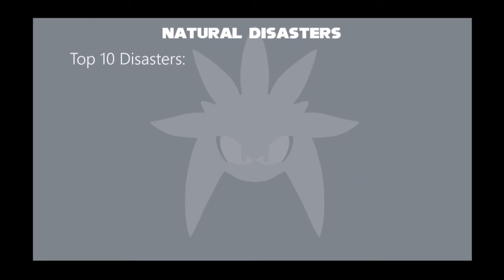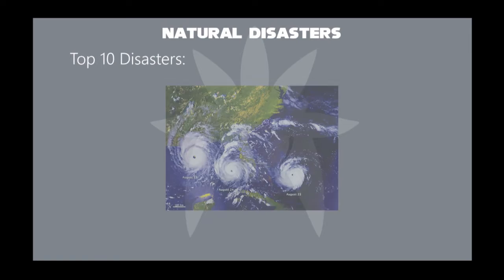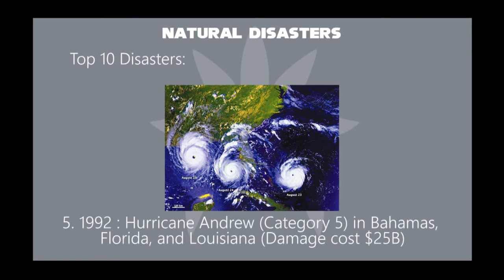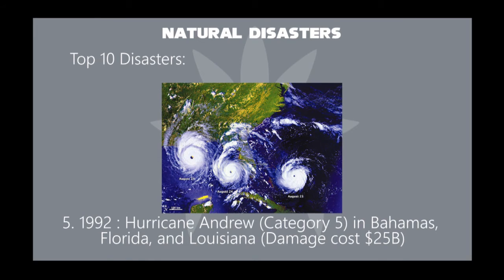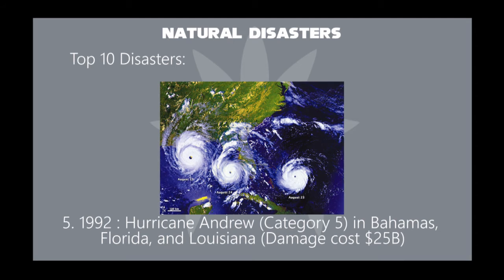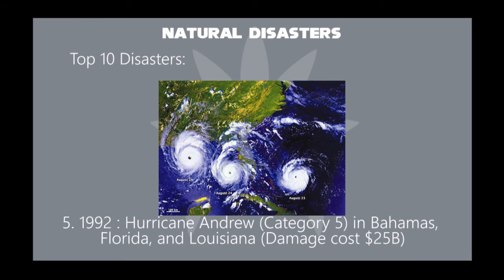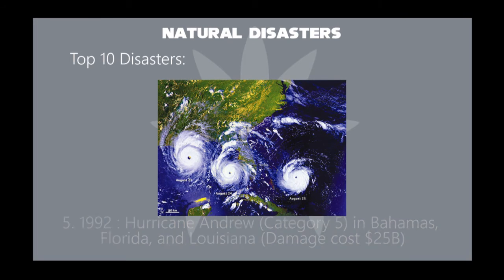In 1992, Hurricane Andrew was a powerful and destructive Category 5 Atlantic hurricane that struck the Bahamas, Florida, and Louisiana in August. At least many trees and poles fell, and many roofs of houses flew off. Its damage cost was taken to be $25 billion.